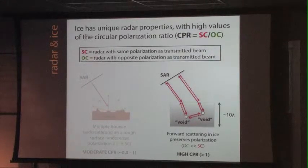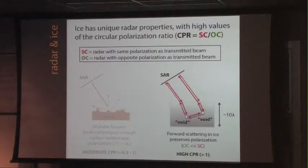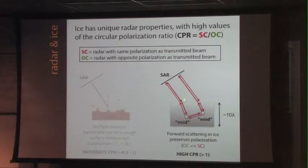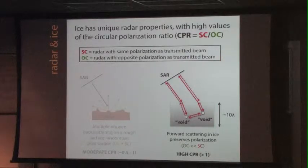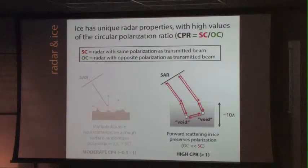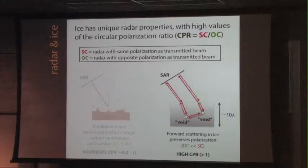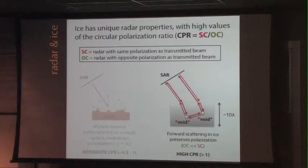What we saw with the Galilean satellites was a very high circular polarization ratio, much greater than one. The explanation has to do with a coherence effect. In the case of ice, there's no backscatter — only forward scatter. The radar beam enters the ice, scatters off voids, and forward-scatters back to the radar without the polarization ever flipping, so you only see same-sense return. In addition, radar waves going in exactly opposite directions add coherently, giving a very bright signal. This produces a very bright coherent effect and very bright same-sense radar return.